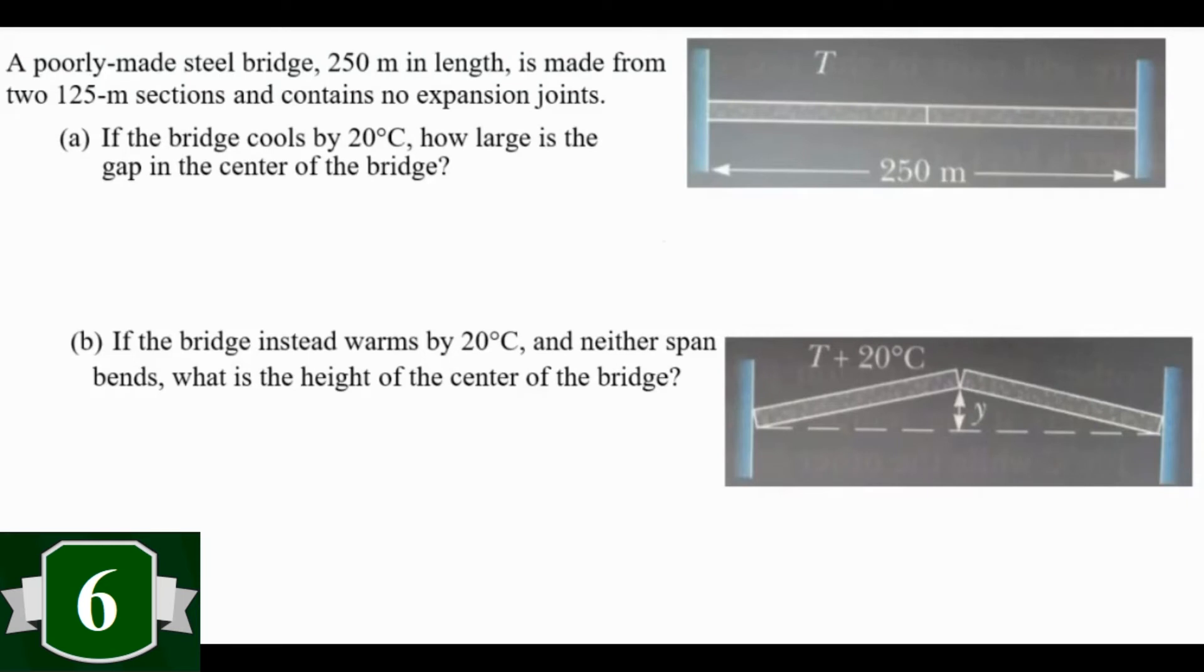Suppose we have a 250 meter steel bridge that some massively overpaid engineer has decided to make out of two 125 meter sections with no expansion joints. So the first question is, how big does the gap get between those spans if the bridge cools by 20 degrees Celsius? And the second question is, if the temperature goes up and the bridge buckles, how big will that buckle be at 20 degrees Celsius?